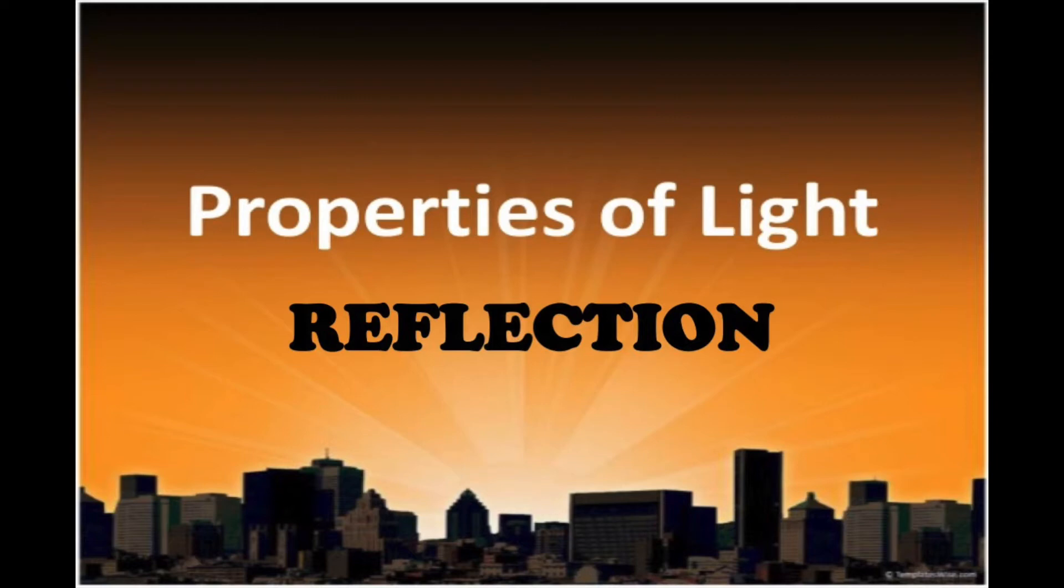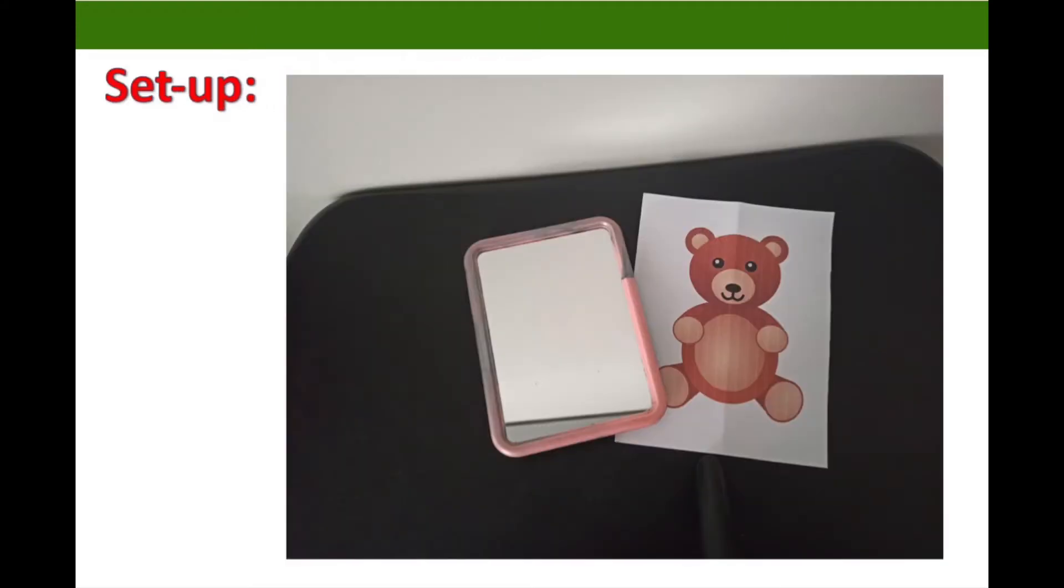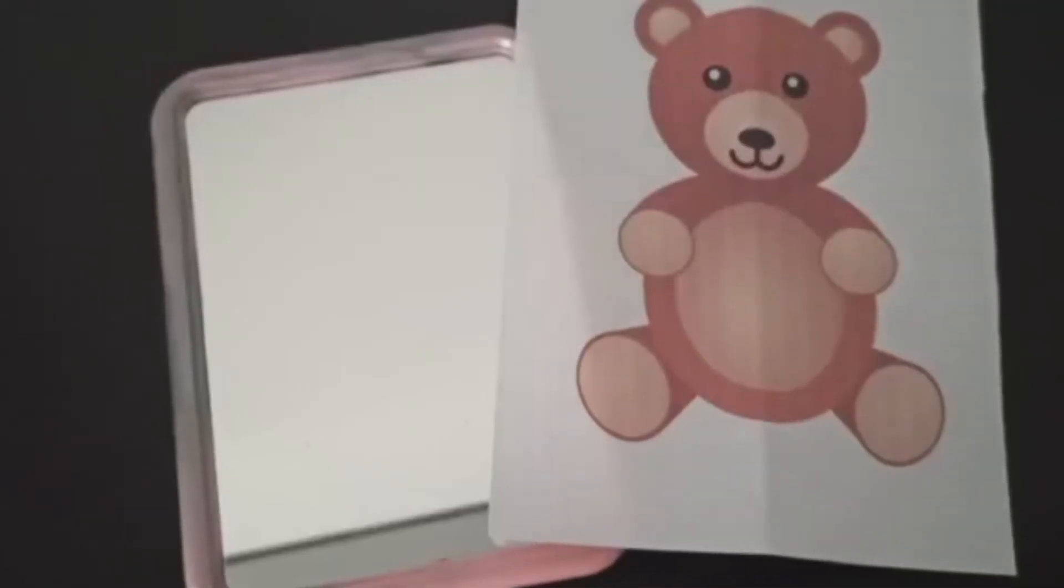The only reason we can see things around us is that light reflects off them into our eyes. Let's try this simple activity and investigate how light reflects objects. You'll be needing the following materials. And now, watch this video.